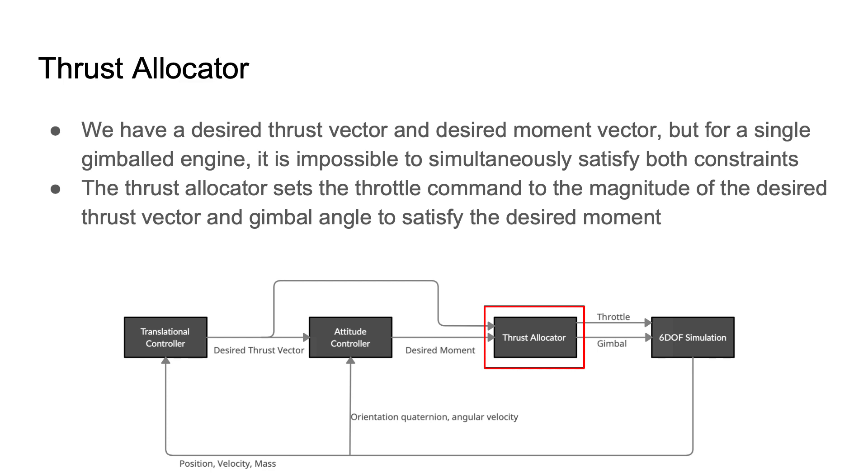But if we assume that attitude dynamics occurs on a much faster timescale than translational dynamics, which is a fairly good assumption, we can come up with a good enough thrust allocation scheme. Firstly, the throttle command is the magnitude of the desired thrust vector, and then we can set our gimbal angles to achieve the desired moment.